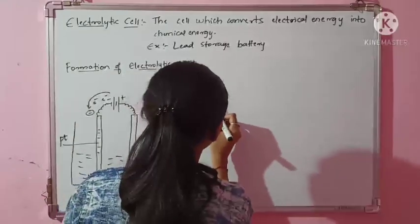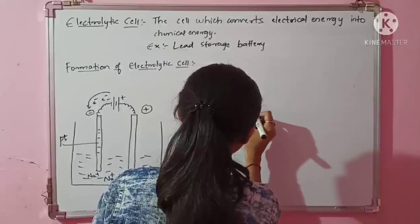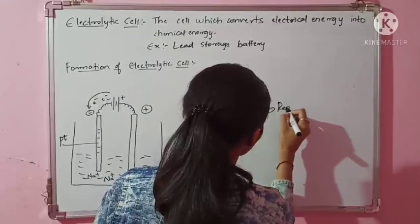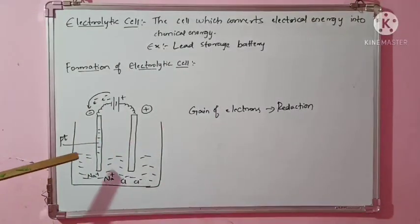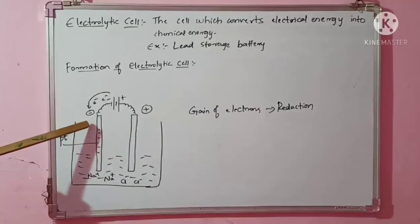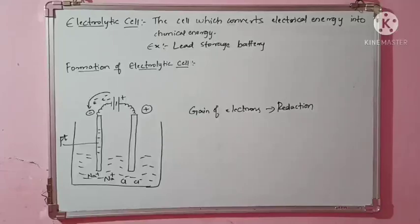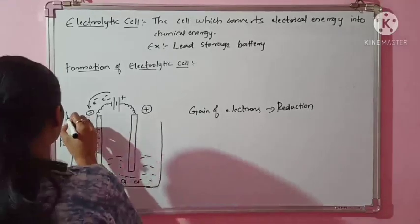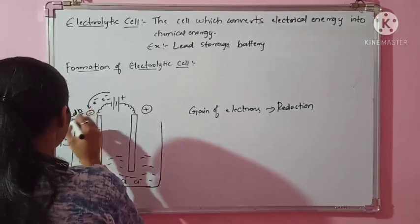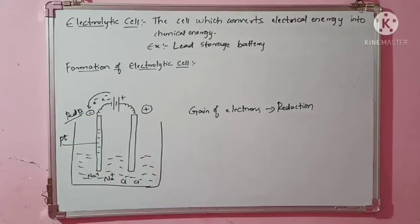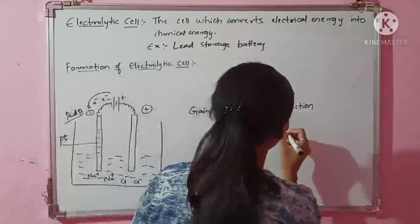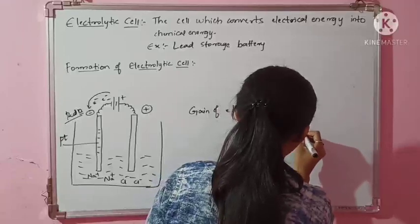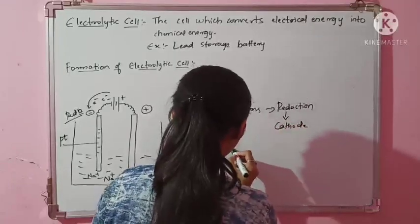Gain of electrons means reduction — you have already studied this. So at this particular left electrode, reduction is taking place. And you know that reduction always takes place at the cathode, while oxidation always takes place at the anode. So since reduction is occurring here, this electrode is treated as the cathode.